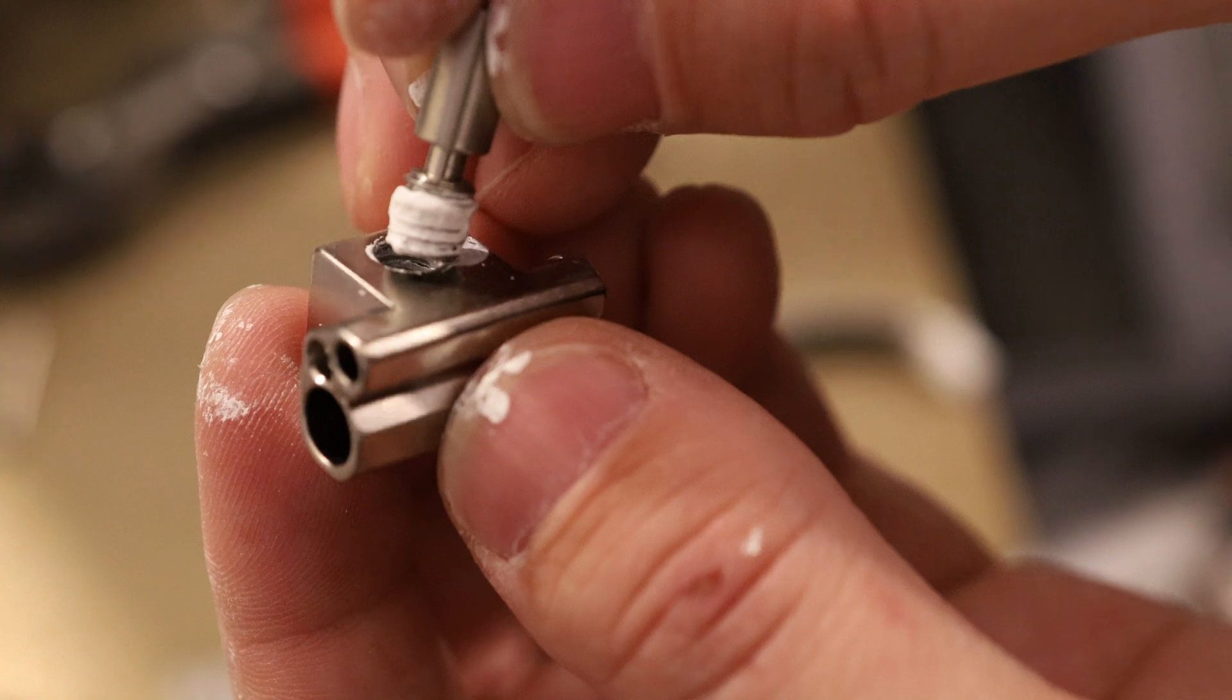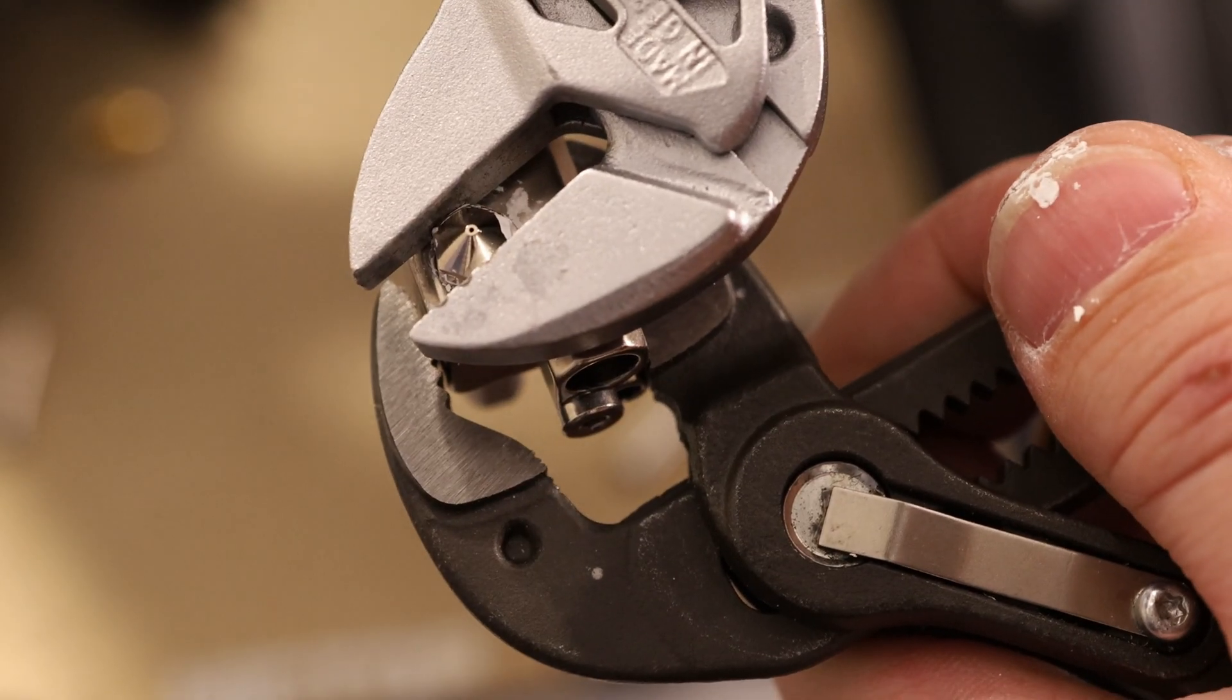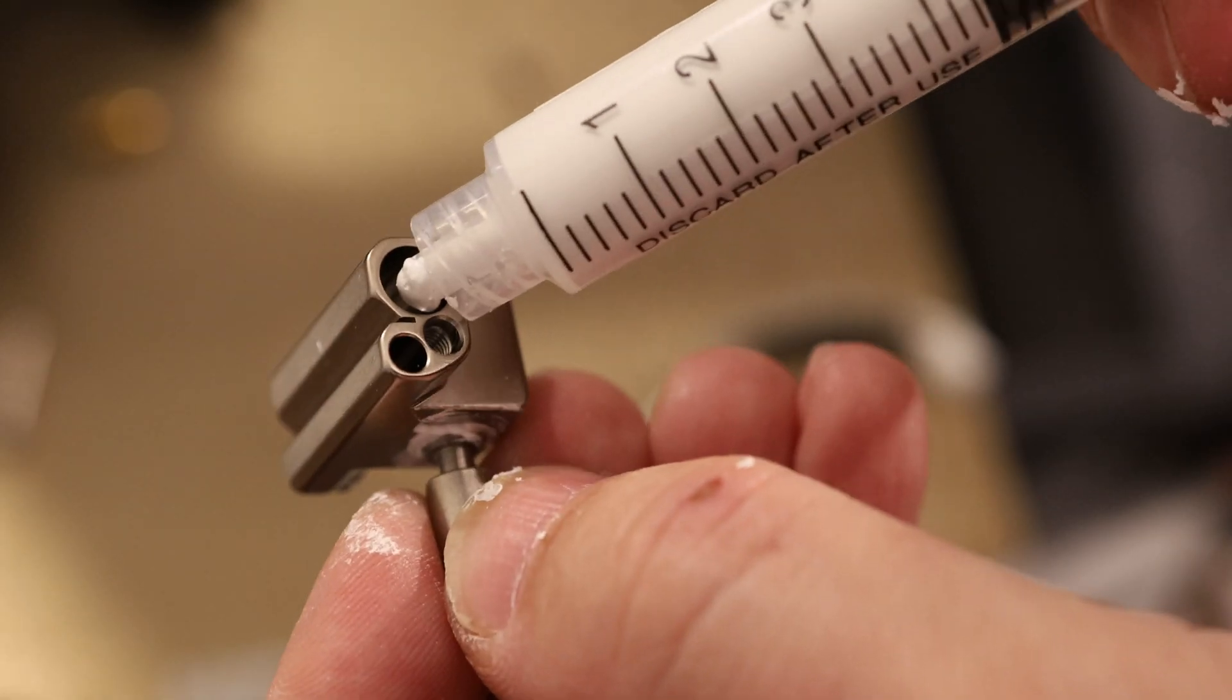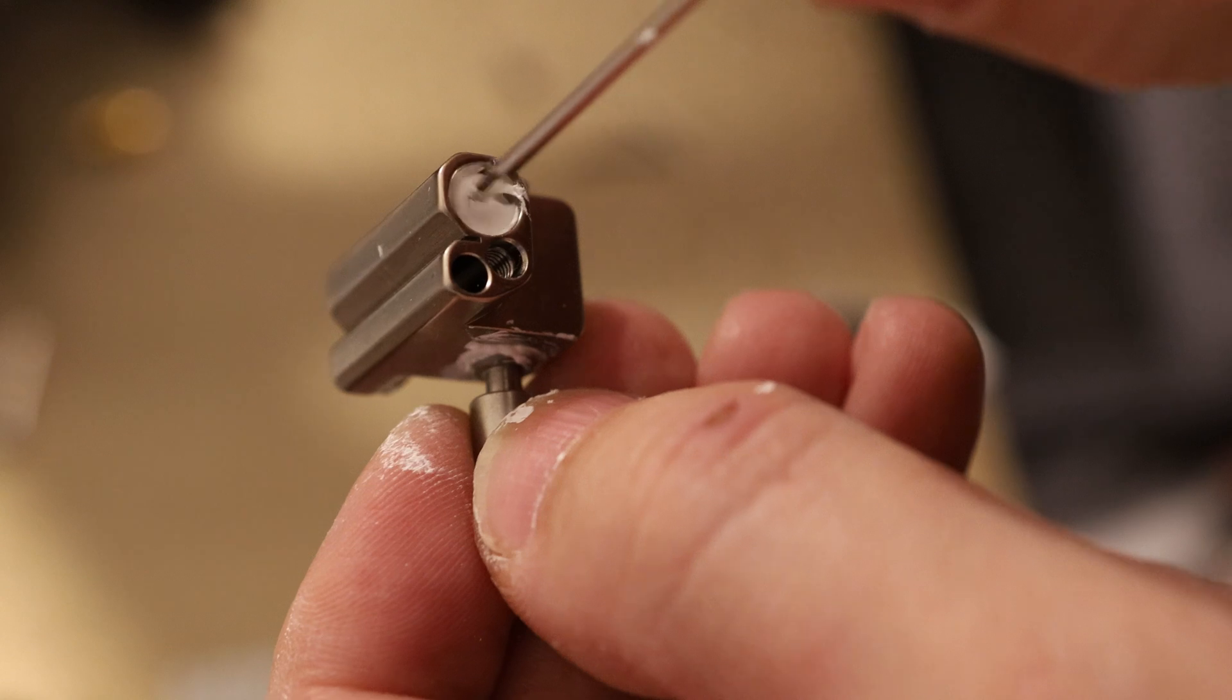I'm going to torque down this nozzle. We'll follow that up with a hot tightening just to make sure it's on there good. Time for more boron nitride paste. We'll make sure the walls are nice and coated.